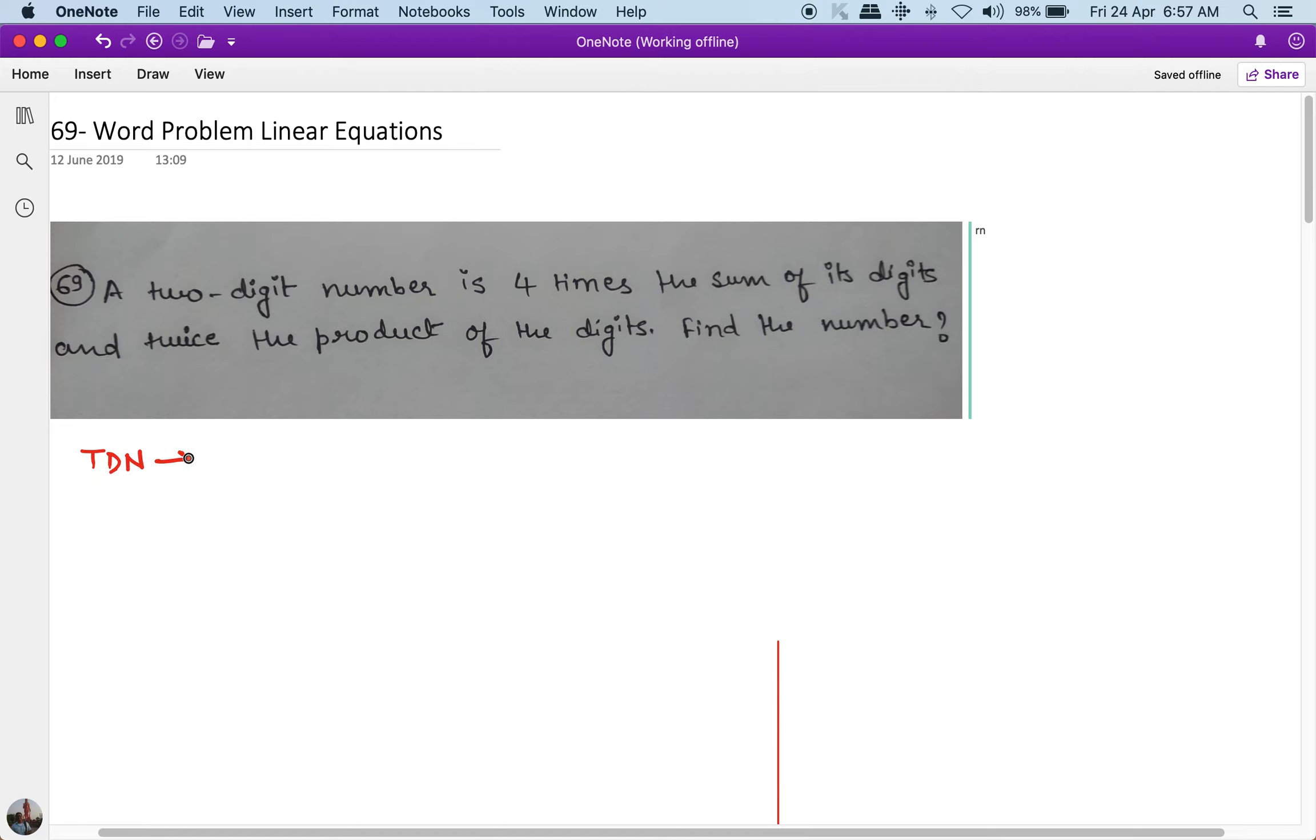So like many previous questions we'll write TDN, two digit number is four times the sum of the digits. So 10x plus y is the original number. This is equal to four times of x plus y.